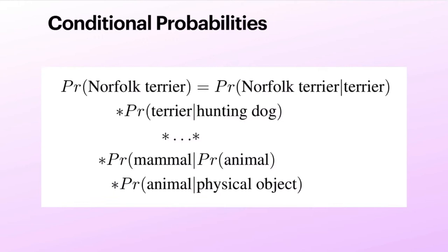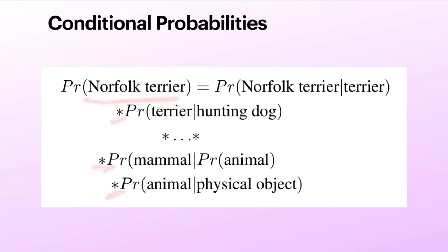One more change is the use of conditional probabilities. If you consider classes which are exclusive, you need not worry about conditional probability. But according to the tree structure, we have dependencies. We need to identify whether it is a mammal or not, provided that it is in the animal category — because parent and child nodes are linked. If it is an animal, only then can it be a hunting dog. If it is a hunting dog, only then can it be a terrier or some other subcategory. So instead of calculating the probability for the terrier category directly, we calculate the conditional probability for the whole tree to get the final probability score.